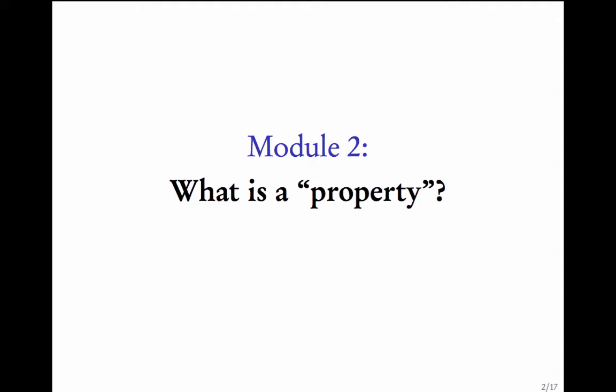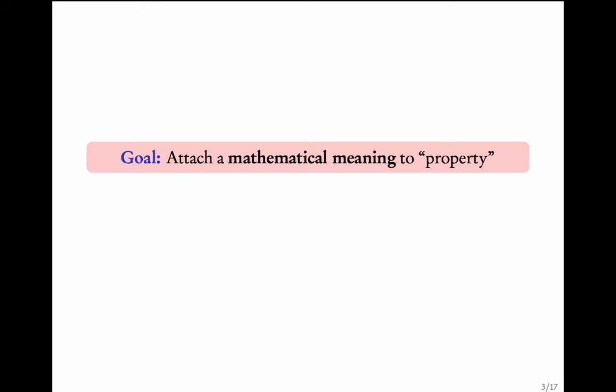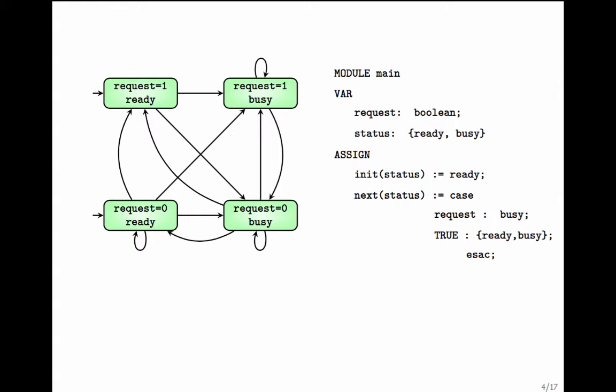What is a property? The goal is to attach a mathematical meaning to the word property. For a model, we have a mathematical description in terms of states and transitions. Similarly, we want to attach a mathematical description with the word property. Let us start building this definition through examples. Consider the transition system which we had seen previously, with variables request and status. This is the new SMV code corresponding to this transition system.